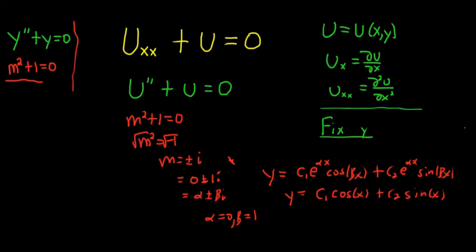So in our problem, it's not y, it's u. Okay. Also in our problem, we have a partial differential equation. So these constants are unknown functions of the other variable. So they're going to be unknown functions of y. So the answer to the DE is going to be exactly the same, except it'll be f of y times cosine x plus g of y times sine x.